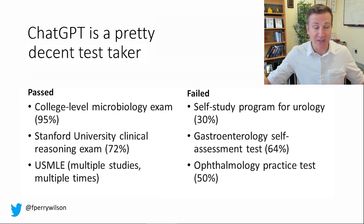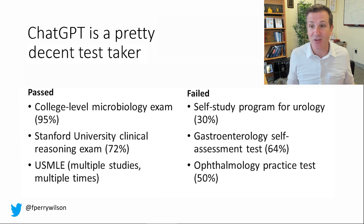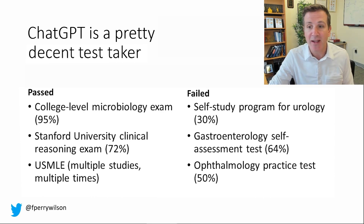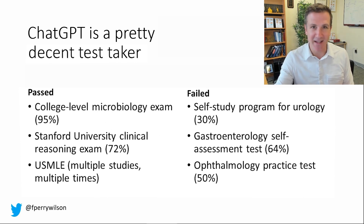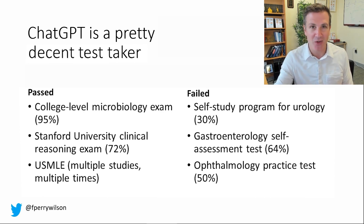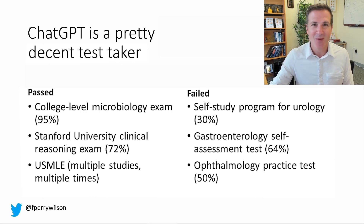But I should point out that some studies have shown that it did not pass certain exams. The gastroenterology self-assessment test, for example — it only got 64%, and passing on that test is 70%. The ophthalmology practice test was 50%. This is transient. I have no doubt that as more data is fed in and as these devices are optimized to take tests — remember, they weren't built to take tests at all — you'll get much, much higher scores. So we can't say 'oh, we're still better test takers.' We're at a very brief moment in time when that is going to be true.